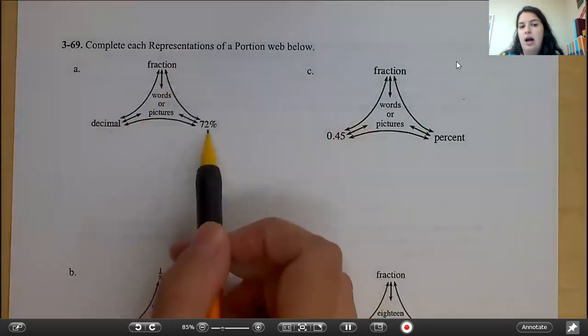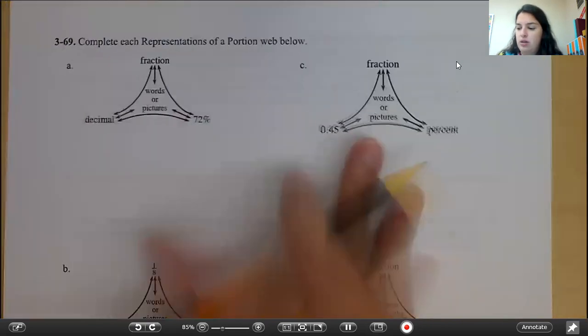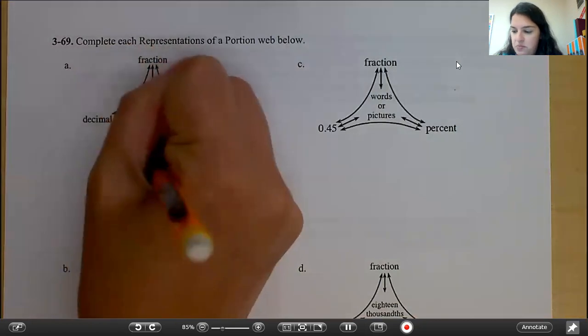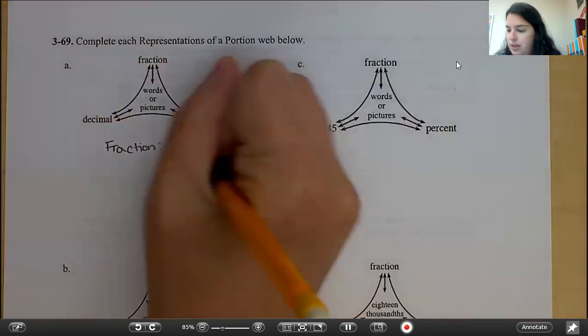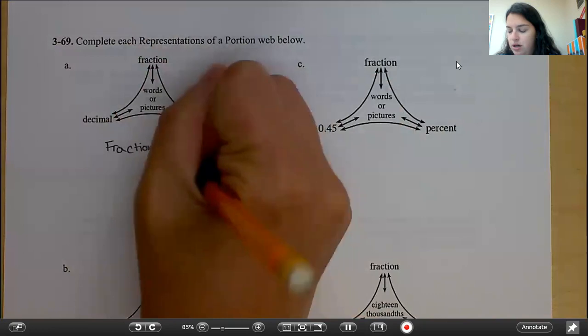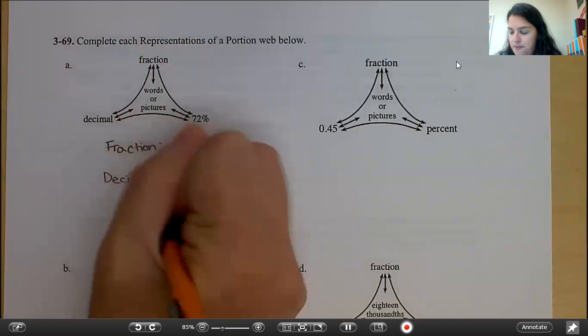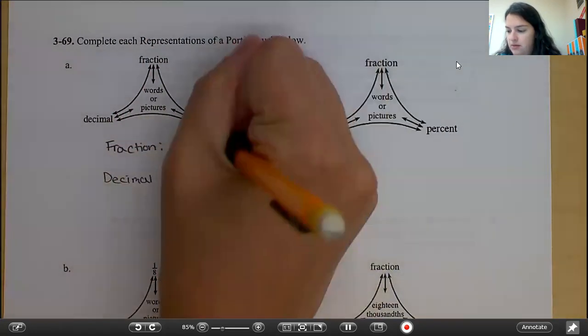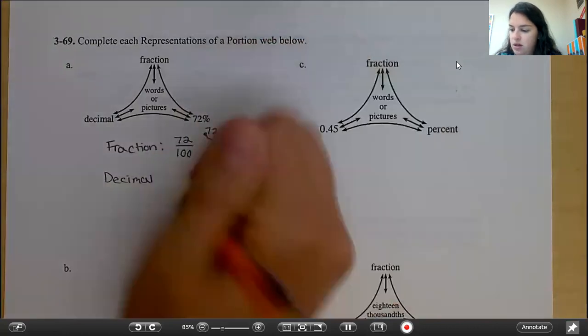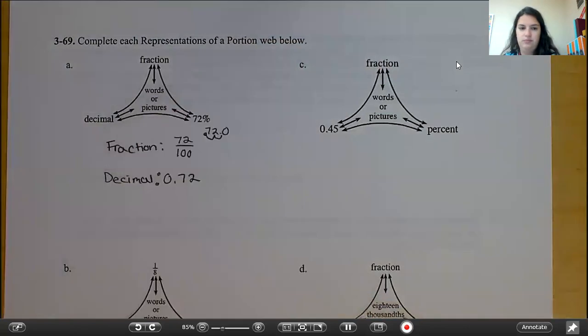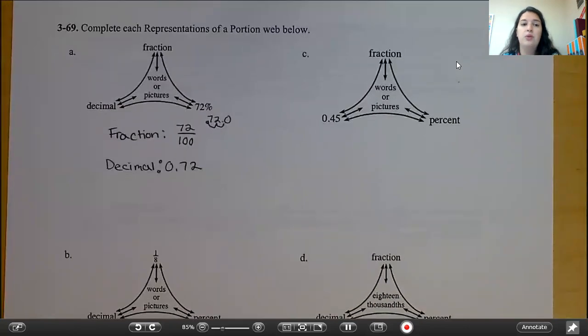So remember, percent is per every 100. So your fraction, I'm going to write it down here, would be 72 over 100. Your decimal, so this is going to be 72.0, you move it two to the left, would be 0.72.